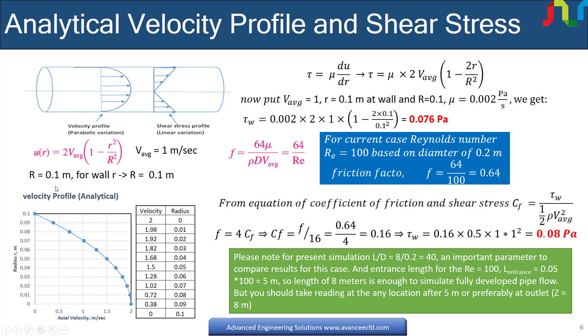Here capital R is equal to 0.1 meter as diameter for this pipe is assumed to be 0.2 meter. We can find out the theoretical shear stress at the wall by using the formula for shear stress. Differentiate the velocity with respect to radius and multiply it by viscosity and putting appropriate values of terms. We have the wall shear stress to be 0.076 pascal. As we have discussed the friction factor formula in last slide, putting the Reynolds number equals 100, we get the friction factor equal to 0.64.